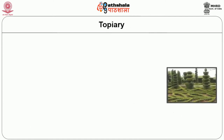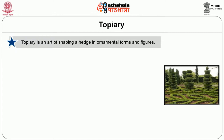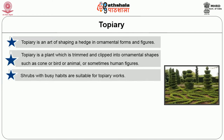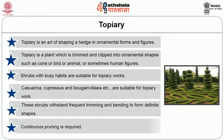Construction space — the first element is topiary. Topiary is the art of shaping hedges in ornamental forms and figures. Topiary is a plant which is trimmed and clipped into ornamental shapes such as cone, bird, animal or sometimes human figure. Shrubs with bushy habits are suitable for topiary work. Casuarina, cypress and bougainvillea are the important plants used for topiary work. Continuous pruning is required; the plant selected should be capable of being moulded to such shapes.